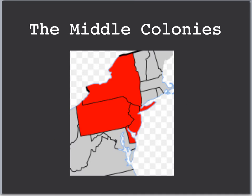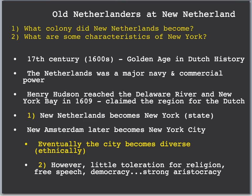The rest of the video will focus on the middle colonies — they're stuck in the middle between the southern colonies and New England. We'll talk about the characteristics of the middle colonies: New York, Pennsylvania, Jersey, and Delaware. The first colony we're going to look at is New Netherlands. New Netherlands eventually becomes New York, and that is actually the answer to the first question. We'll look at some of the characteristics of New York.